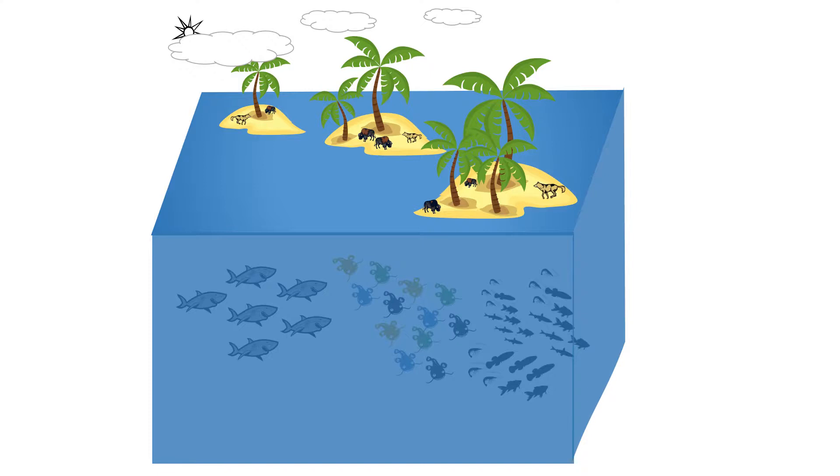Natural selection refers to the variations in the genotype of organisms that increase the chance of survival. In the coming slides we are going to be talking about the genotype, the organisms, and the survival. So if these terms are new to you, don't worry, don't be stressed, I will introduce them one by one. In natural selection, those variations in the genotype that increase an organism's chance of survival are preserved and multiplied from generation to generation.